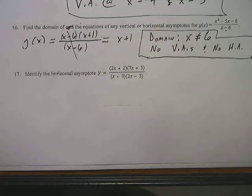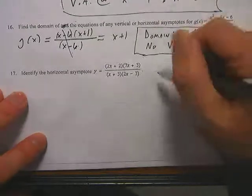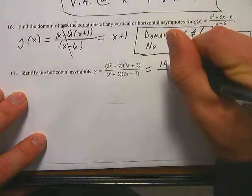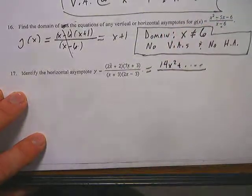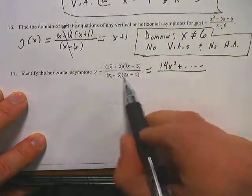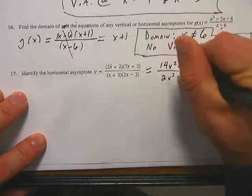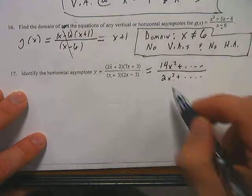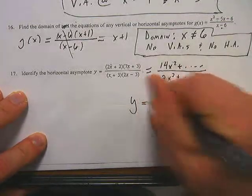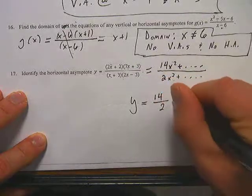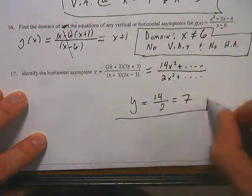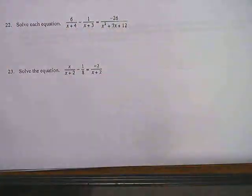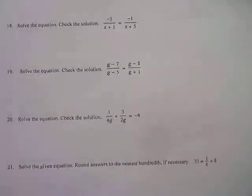Number 17: identify the horizontal asymptote for (2x + 2)(7x + 3) over (x + 3)(2x - 3). When talking about the horizontal asymptote, we're only concerned about the leading terms. Multiplying the first two together gives 14x squared plus other stuff. On the bottom, x times 2x is 2x squared. The leading exponents are the same, so the horizontal asymptote is found by dividing the leading coefficients: 14 over 2 equals 7. The horizontal asymptote is y = 7.